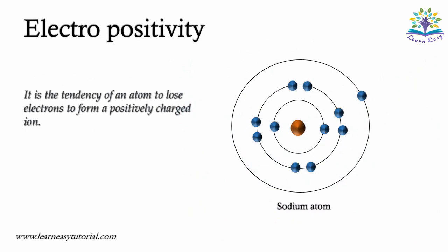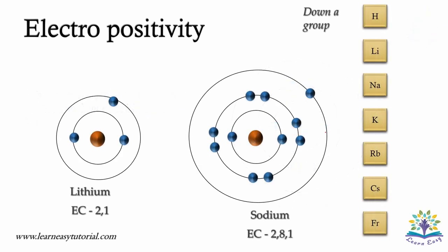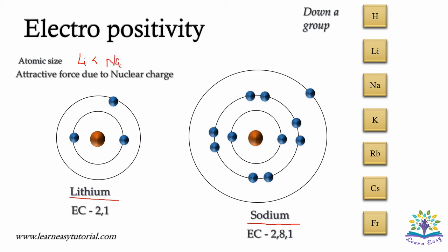Electropositivity is a tendency of an atom to lose electrons and become a positively charged ion. Consider the example of lithium and sodium. The atomic size of lithium is less than that of sodium. Hence, the valence electron of sodium experiences a less force of attraction when compared to that of lithium. Hence, it is easier for sodium to lose an electron and become a positively charged ion. Therefore, the electropositivity of sodium is greater than that of lithium. Hence, down a group, the electropositivity increases.